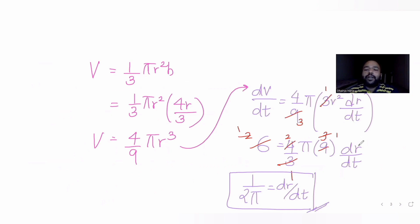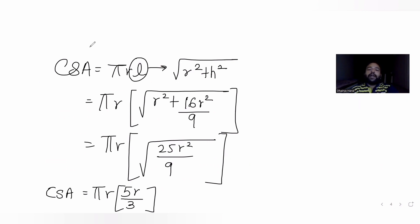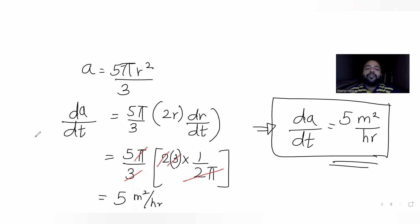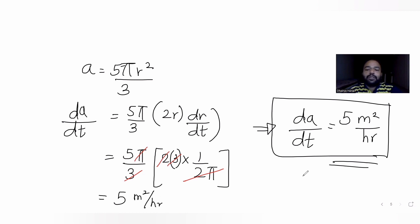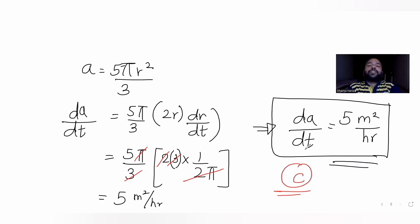We also had curved surface area of the cone as πrl. We expressed the area in terms of r as (5/3)πr² and differentiated with respect to time, giving dA/dt equals (5π/3) times 2r dr/dt. Substituting the known values, we got the answer as 5 square meters per hour, which matches option C.